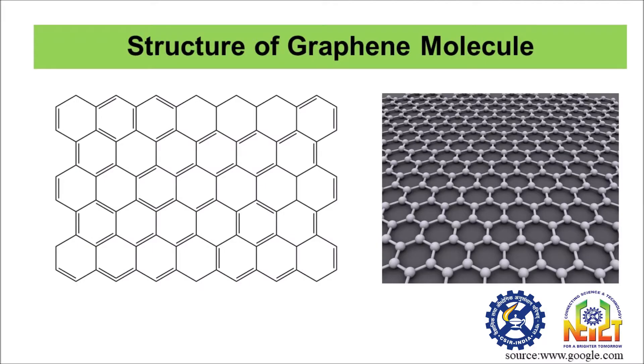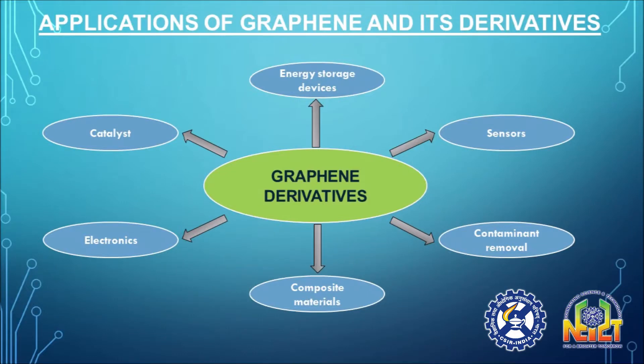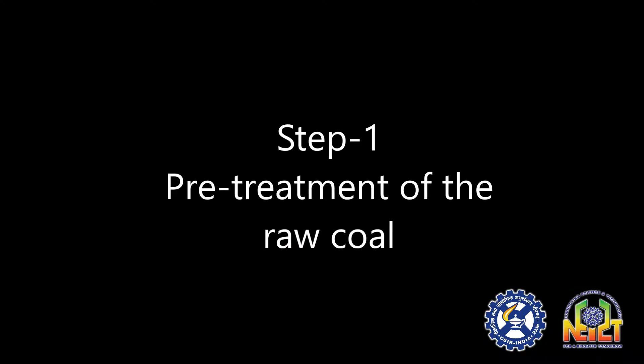Graphene is an allotrope of carbon arranged in the form of a single layer of atoms in a two-dimensional hexagonal lattice. Due to its unique structure, it possesses certain unusual properties which makes it suitable for a wide range of applications. In the synthesis process,